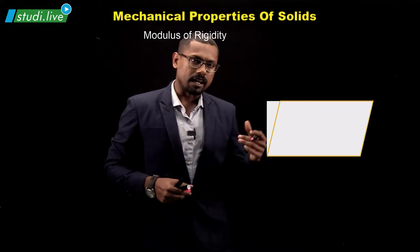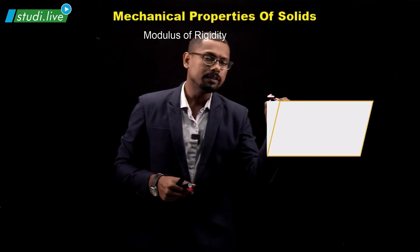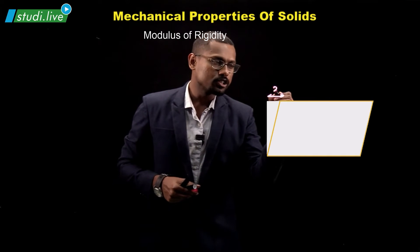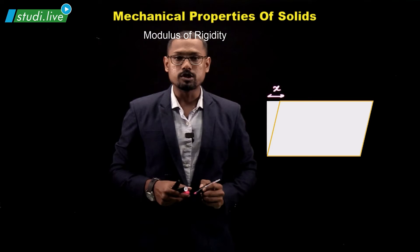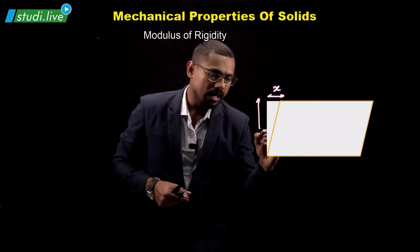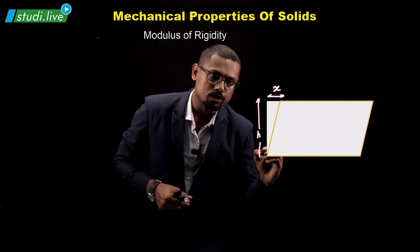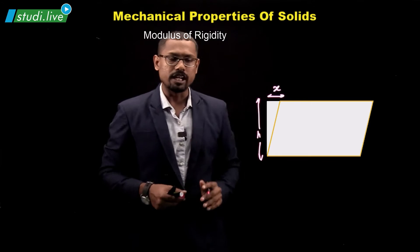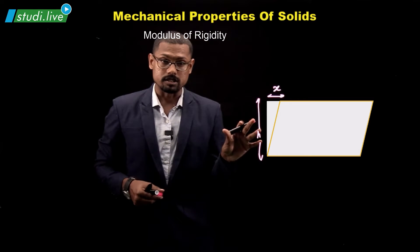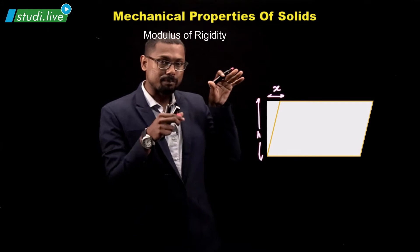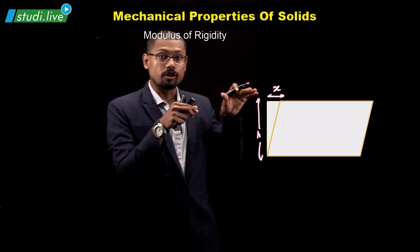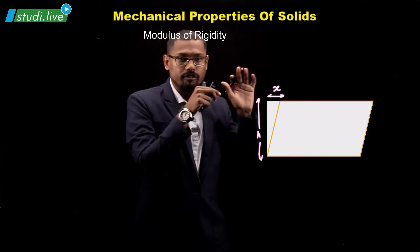There is some tiny extension in here — let me call it x. This happens to be the height of this column, so that is h. The value of h never changes, but the extension x might change depending on the amount of tangential force applied.